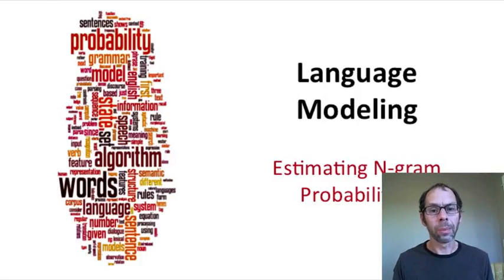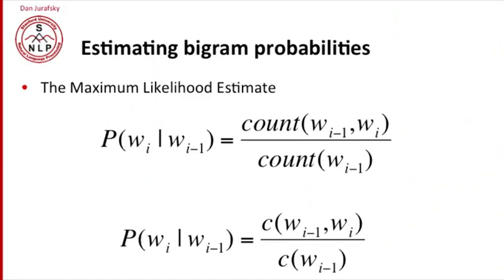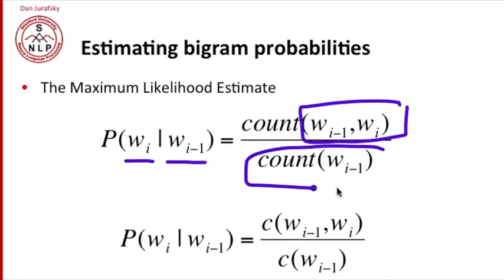How do we estimate these n-gram probabilities? Let's look at bigram probabilities. The maximum likelihood estimate for a bigram probability, the probability of word i given the previous word i minus 1, we just estimate by counting. We count how many times word i minus 1 and i occur together, and divide it by how many times word i minus 1 occurs.